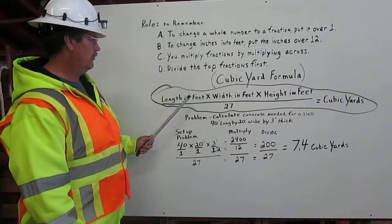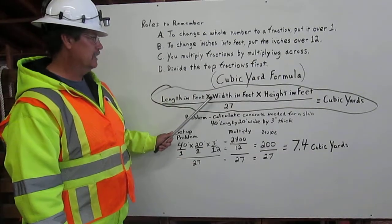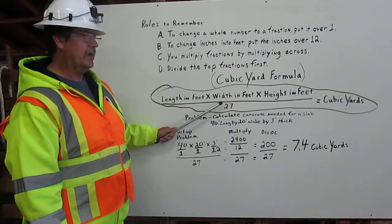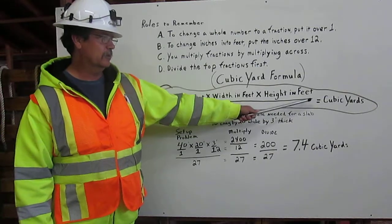Here's our cubic yard formula. Length in feet times width in feet times height in feet divided by twenty-seven equals the cubic yards.